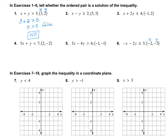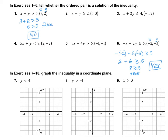Let's look at number six. Here x is negative 2 and y is negative 3. We have negative x, which is negative negative 2 — notice the double negative — minus 2 multiplied by negative 3 is greater than or equal to 5. Simplifying: positive 2 plus 6 is greater than or equal to 5, so 8 is greater than or equal to 5. This is a true statement, so yes, the point (-2, 3) is a solution. Please do numbers two, three, four, and five on your own, then pause the video and turn it back on when you're done.